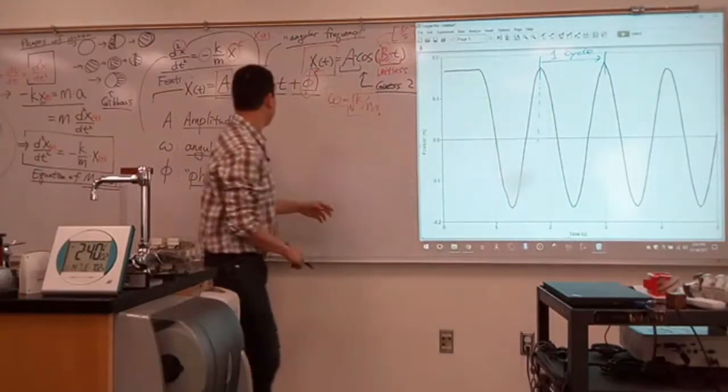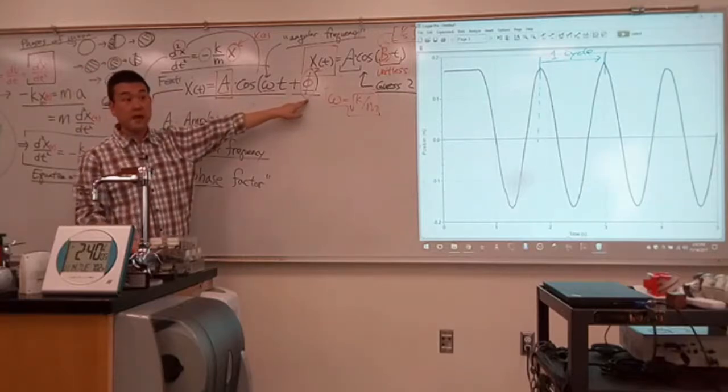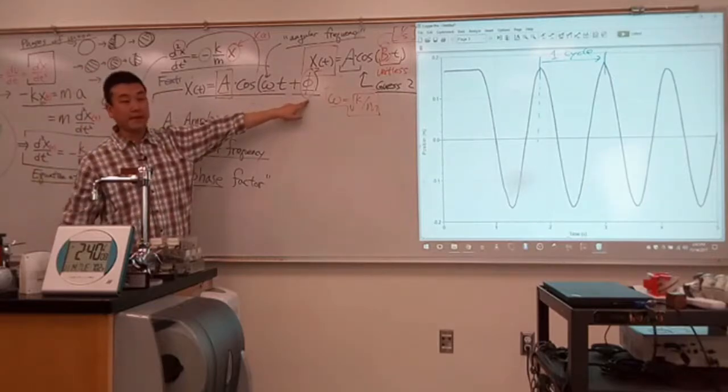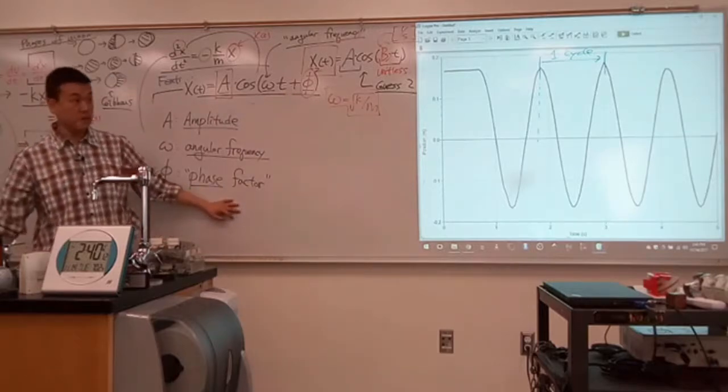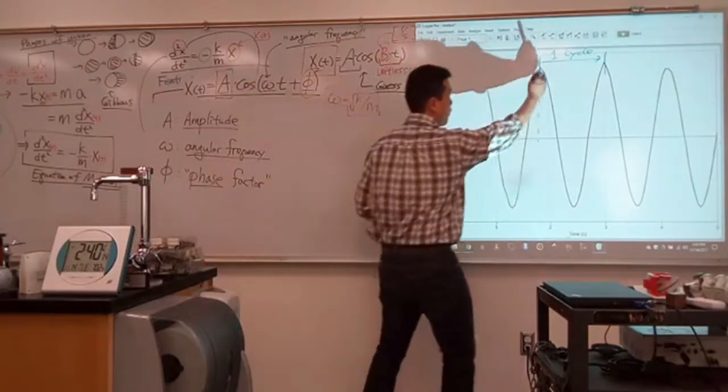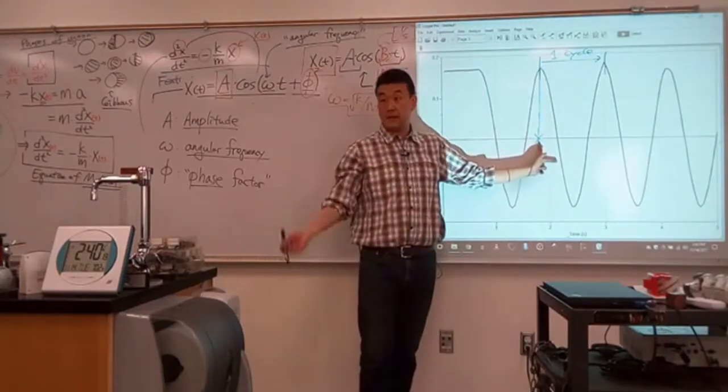So when my phi here, when this phi is equal to zero, then I'm looking at the part of the cycle where the phase factor is zero radian. So that would be this point in the cycle. This point in time would be indicated by the phase.